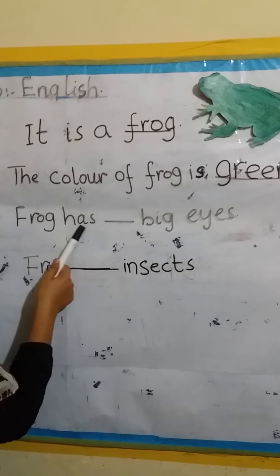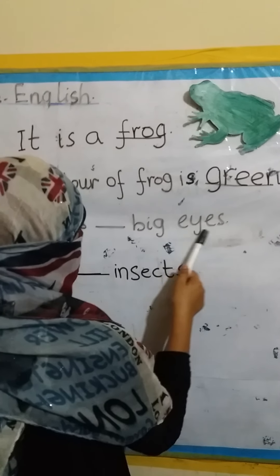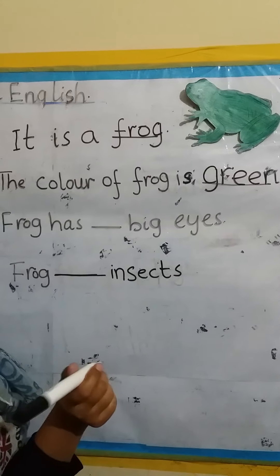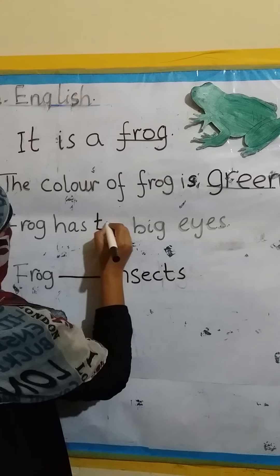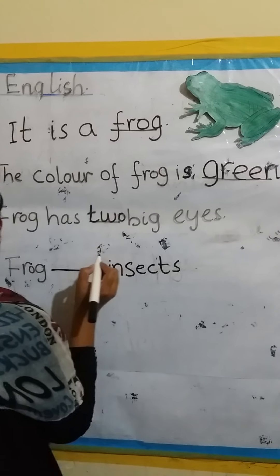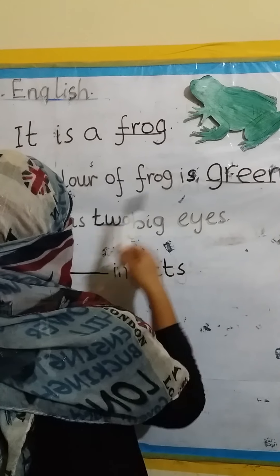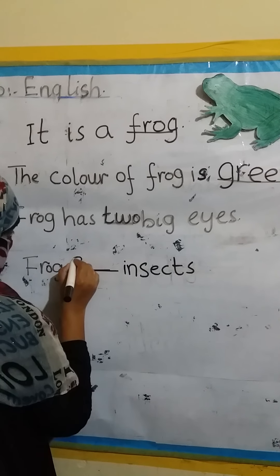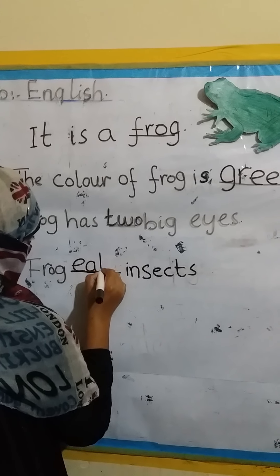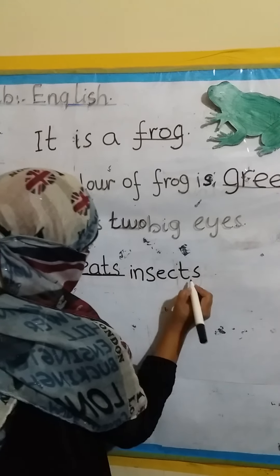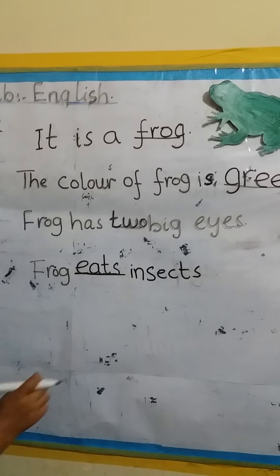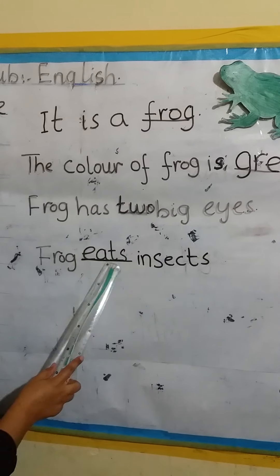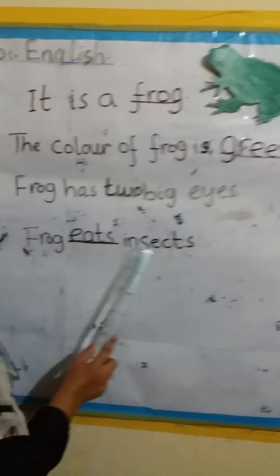Frog has — the frog has two big eyes. How many eyes does the frog have? Two eyes. So we will write here: two big eyes. The frog has two big eyes. And frog eats insects — like mosquito, bee, these type of things. Frog eats insects.